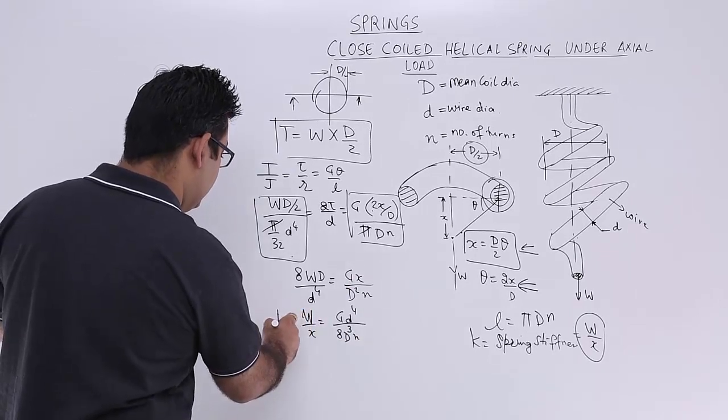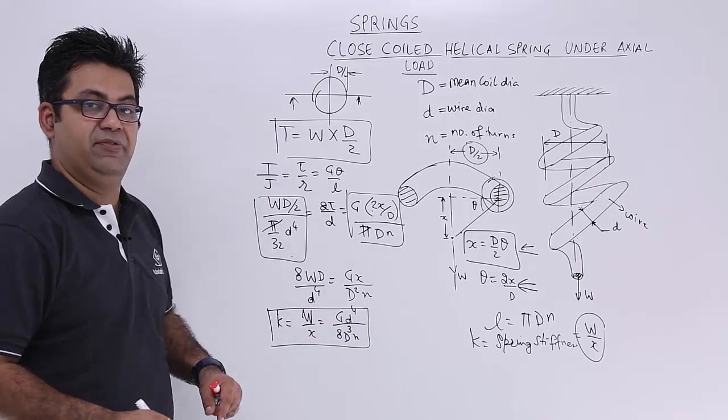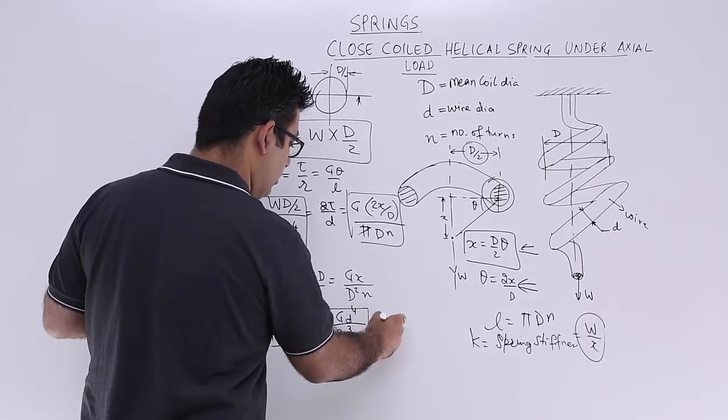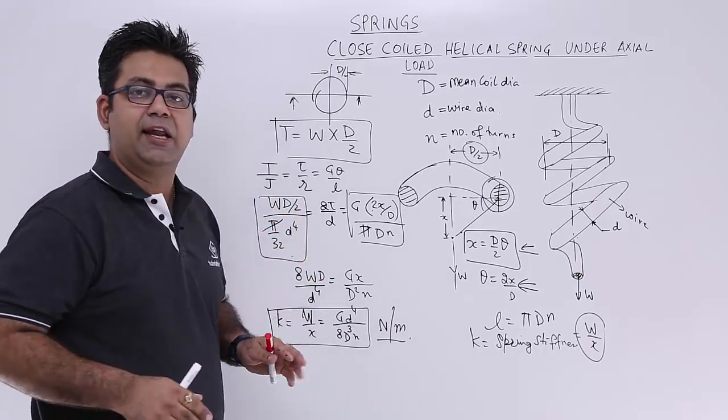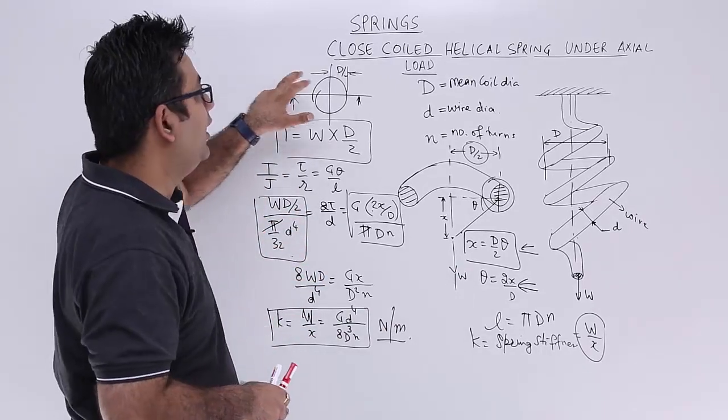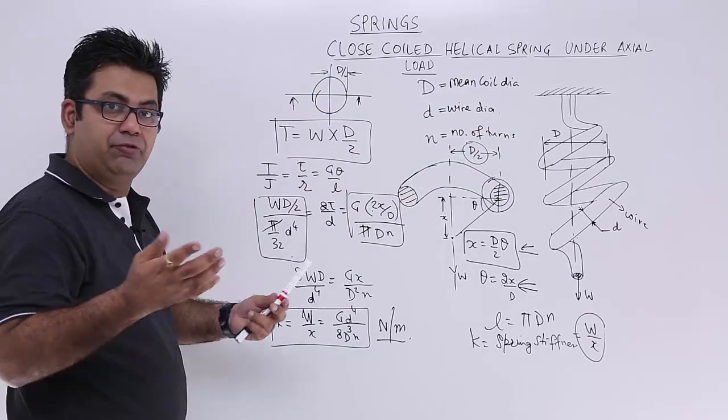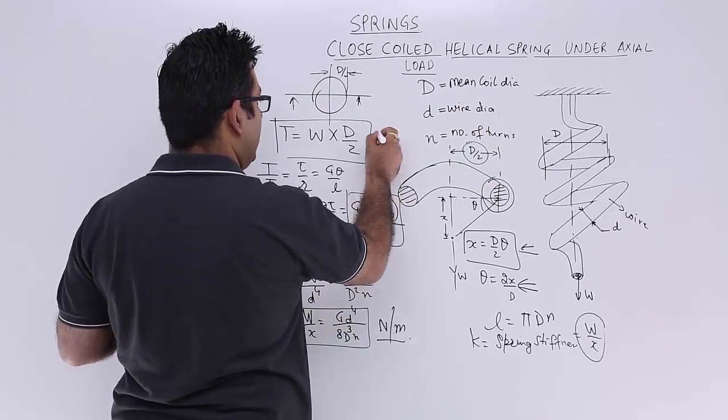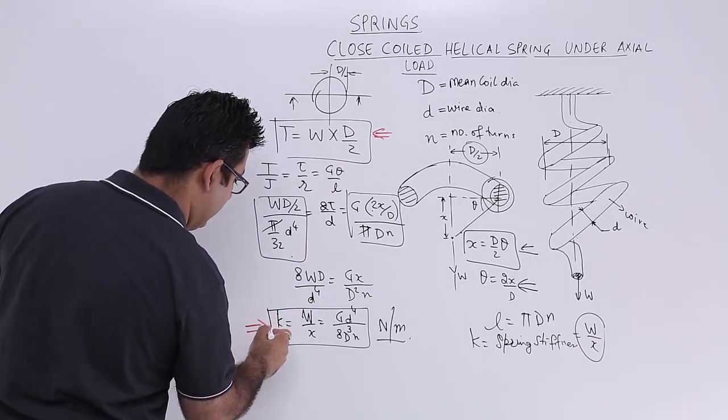And from here this is the value for spring stiffness whose units are Newton per meter. So this is the analysis of the close coiled helical spring under axial load. So the important formulae to note down is this one. And you need to understand and note down this one.